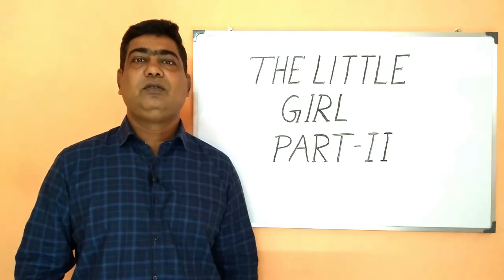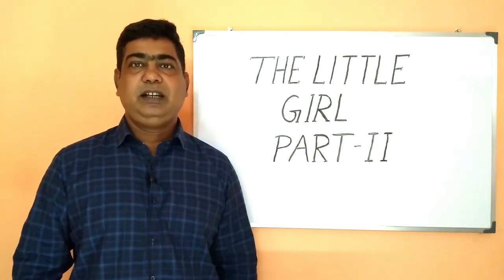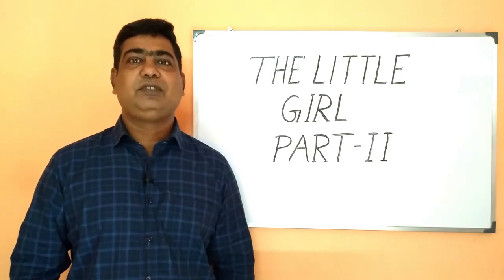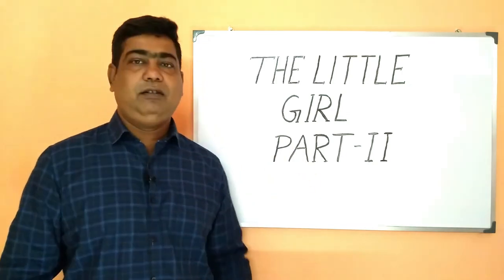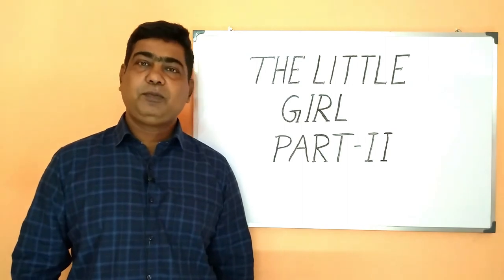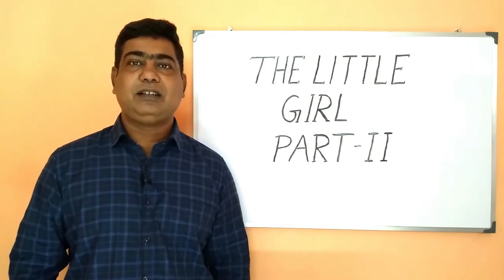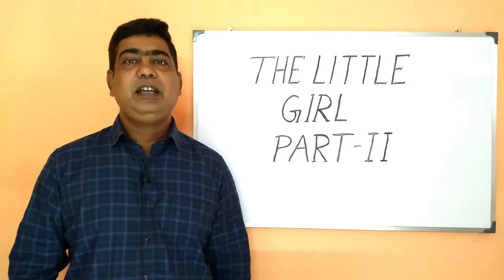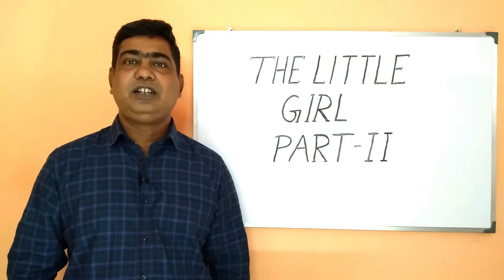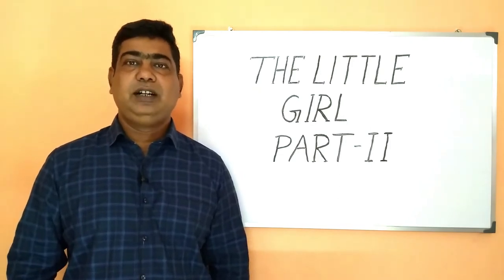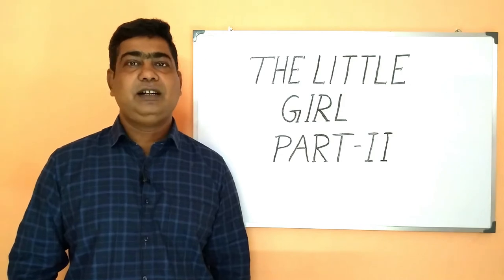Good morning students. Welcome back once again. In today's class, we shall read the second part of the story, The Little Girl. In the first part of the story, we have seen that the little girl Kizia is scolded by her father for tearing some important papers belonging to him. As a result, she is very upset and she goes to her room. Let us see what she does there.